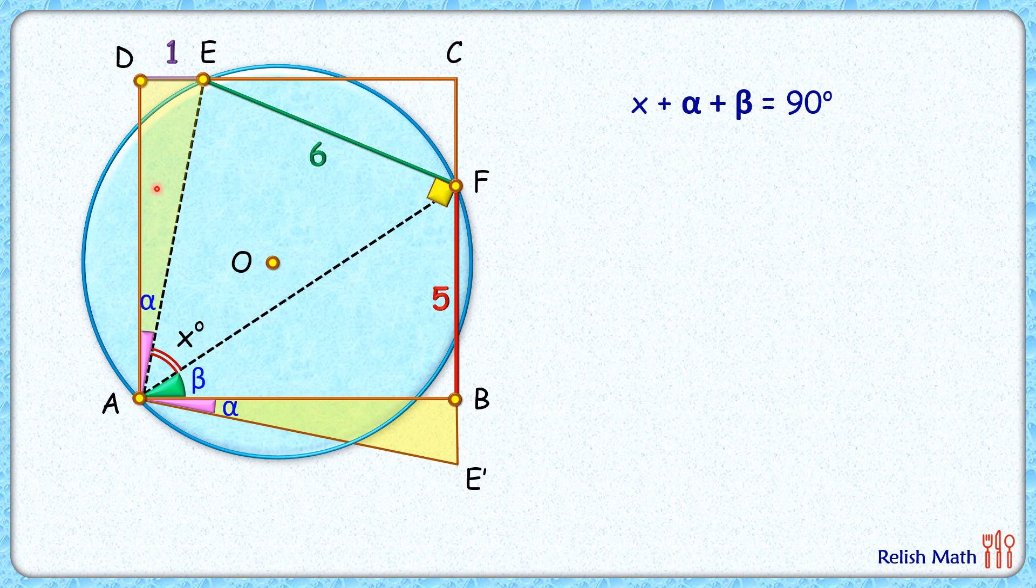These two triangles are congruent to each other. Here angle B is 90 degrees and the bottom angle is the same as angle D, or 90 degrees. Thus FBE' is forming a straight line. As the triangles are congruent, BE' length will be the same as DE, or one centimeter.